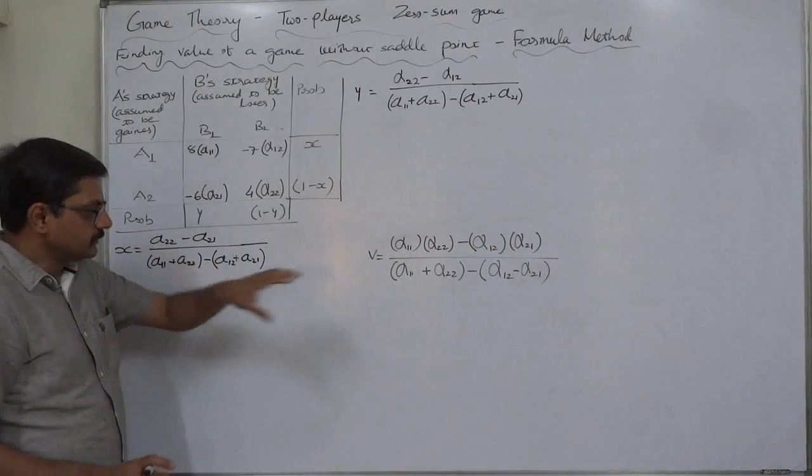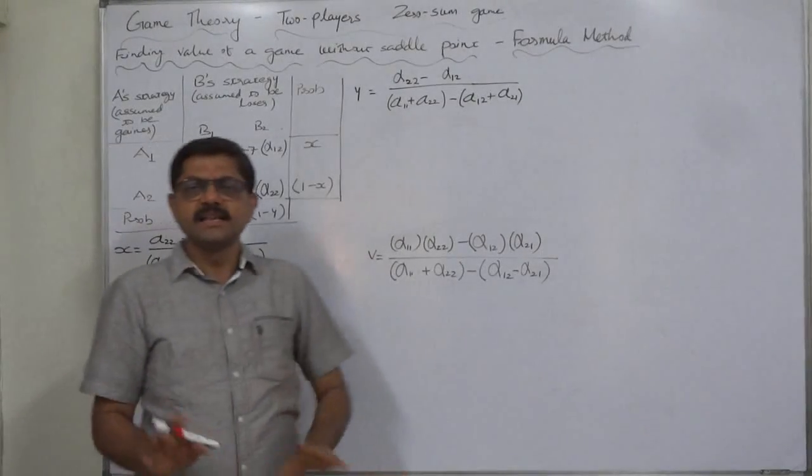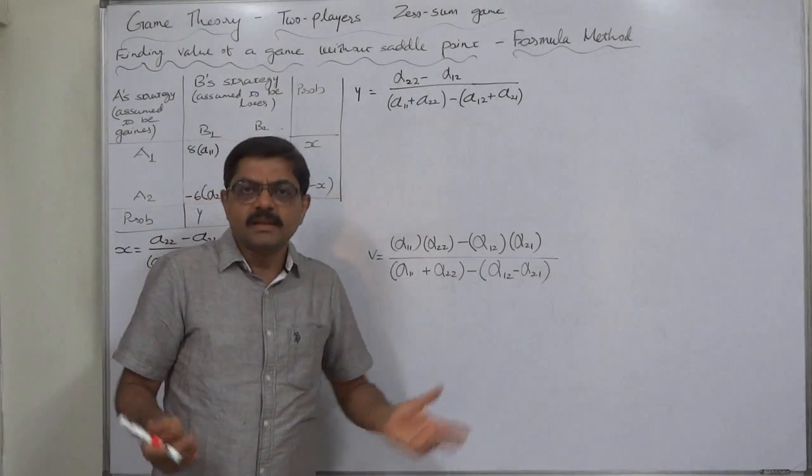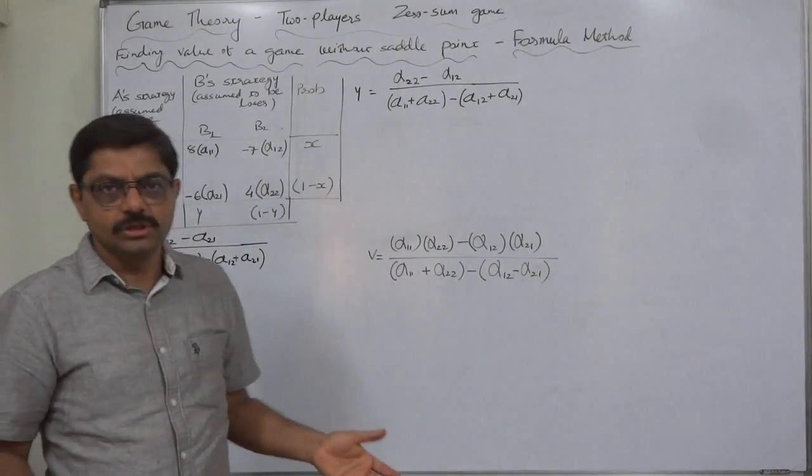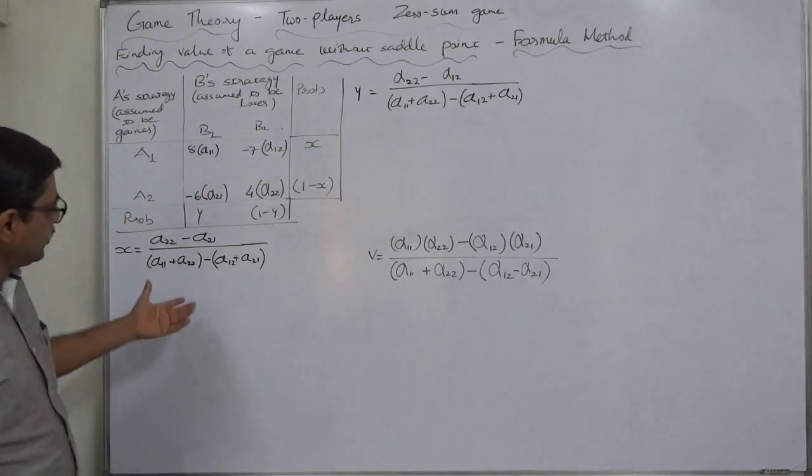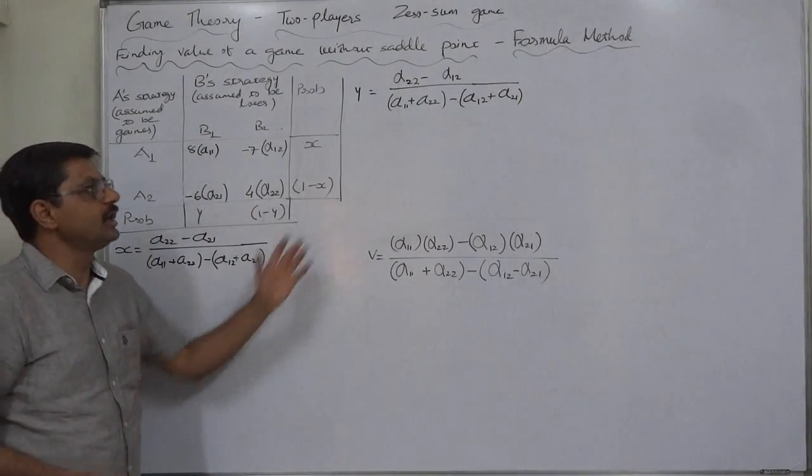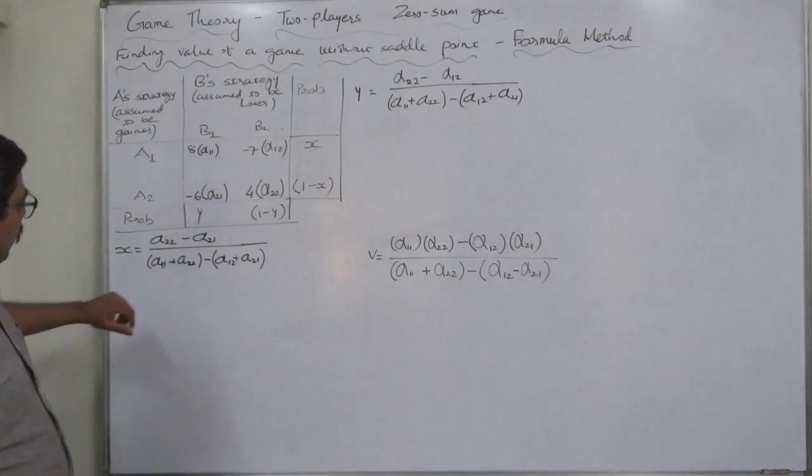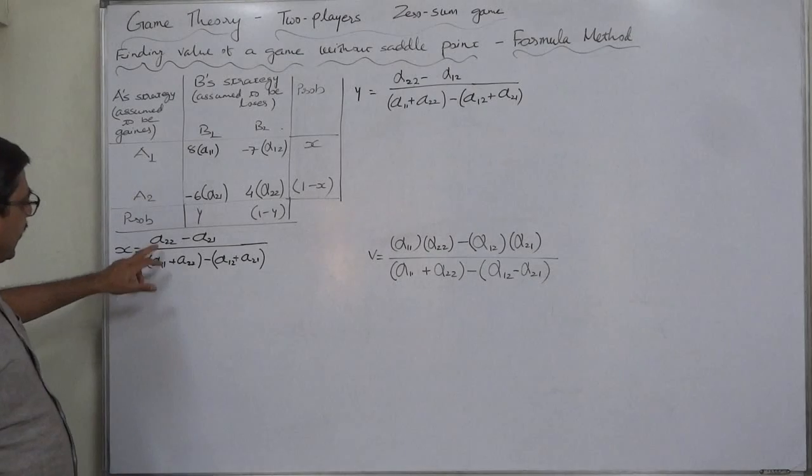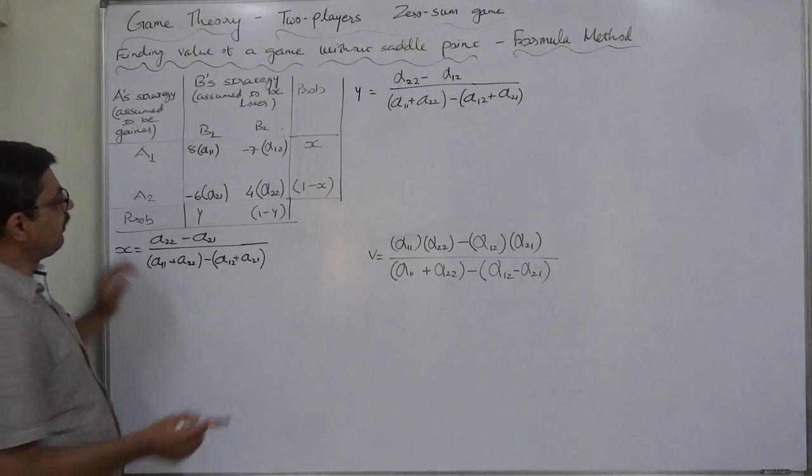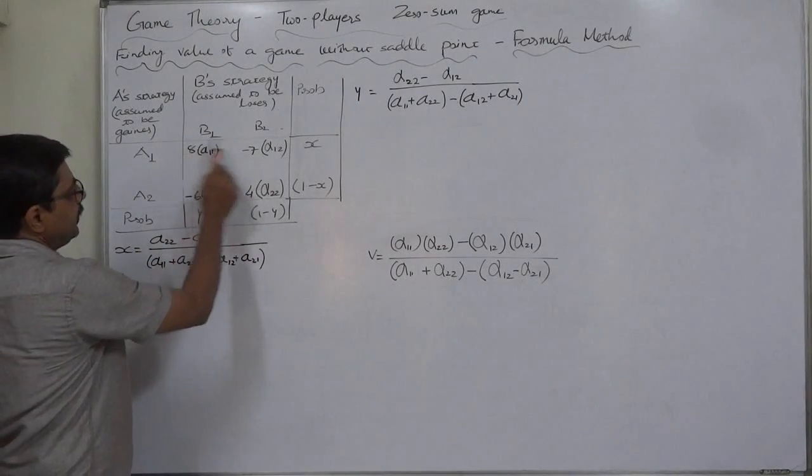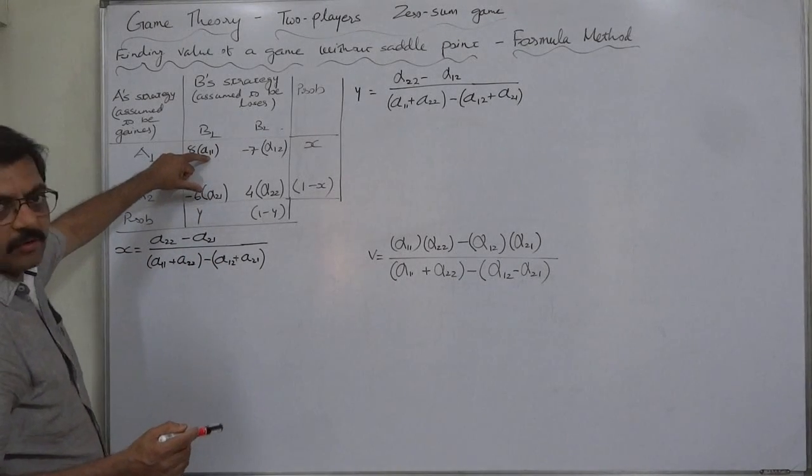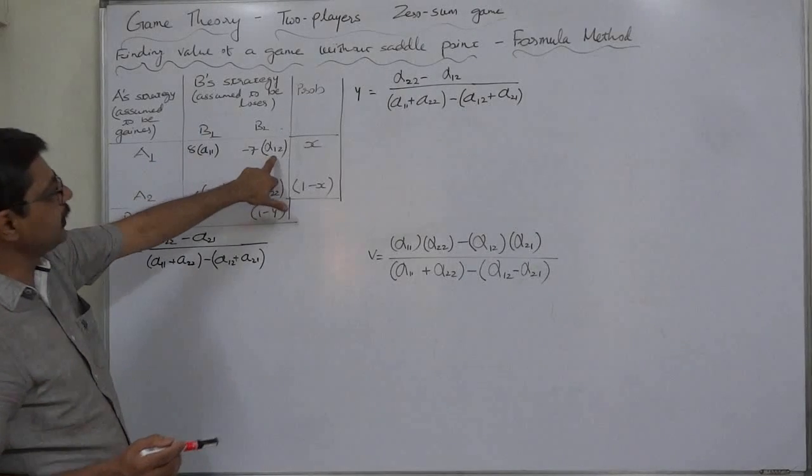But this is quite easy as compared to the algebraic method. But every method has its own limitation or special feature. In this method you have to learn and remember the three formulas. What is the formula of X? Alpha 2 2 minus alpha 2 1. These four values are assigned. Alpha 1 1 that is row 1 and column 1. Alpha 1 2 row 1 column 2.